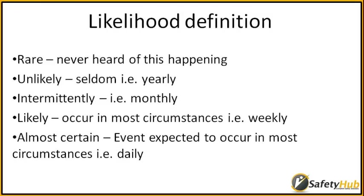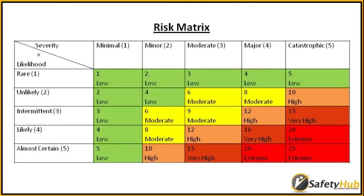Likelihood can move from 'rare' — never heard of this thing happening — all the way to 'almost certain', where the event is expected to occur in most circumstances, pretty much daily. The risk then, if you gauge something using those definitions, you can come up with a risk score — either a word or a number.